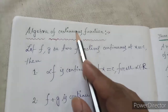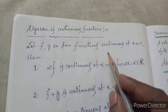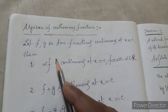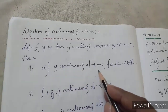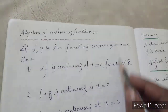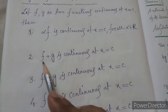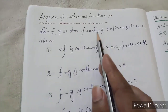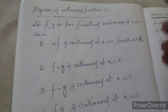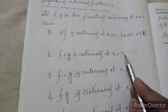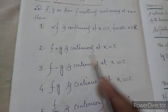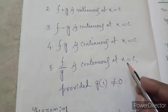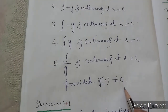Algebra of continuous functions: let f and g be two continuous functions at x equal to c. Then: alpha times f, where alpha is a constant, is continuous at x equal to c for all alpha in R. Also, f plus g is continuous at x equal to c. The sum, difference, and product of two continuous functions are continuous. f divided by g is continuous at x equal to c, provided g(c) is not equal to zero.